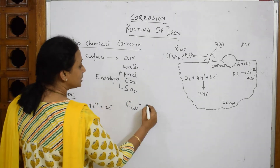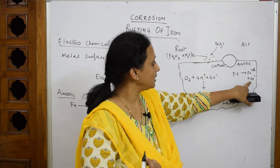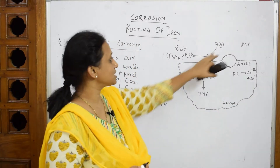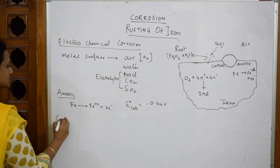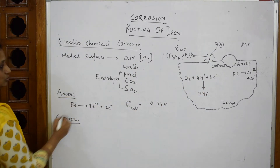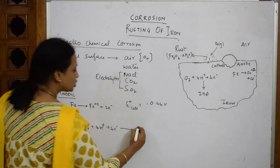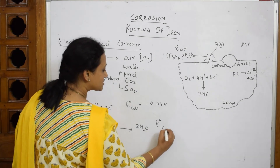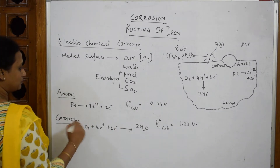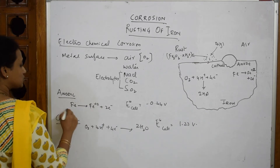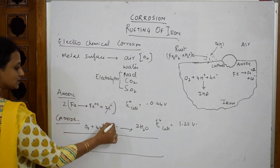The two electrons migrate from anode to cathode, where they are transferred to oxygen from the atmosphere. The cathodic reaction is: O₂ + 4H⁺ + 4e⁻ → 2H₂O, with E° = +1.23 V. To balance electrons, the anodic reaction is multiplied by 2, giving four electrons on each side that cancel out, resulting in: 2Fe → 2Fe²⁺, combined with O₂ + 4H⁺ → 2H₂O.